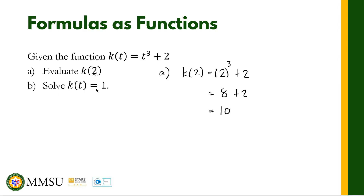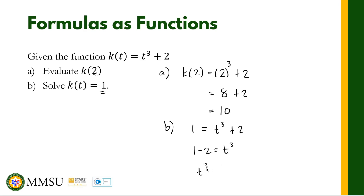For the next part, solve for k of t equals 1. We want to find the input value when the output value is equal to 1. So we have 1 equals t cubed plus 2. Transposing 2 to the other side: 1 minus 2 equals t cubed, so negative 1 equals t cubed. Taking the cube root of both sides, t is equal to negative 1. So negative 1 is our input value such that our output value equals 1.